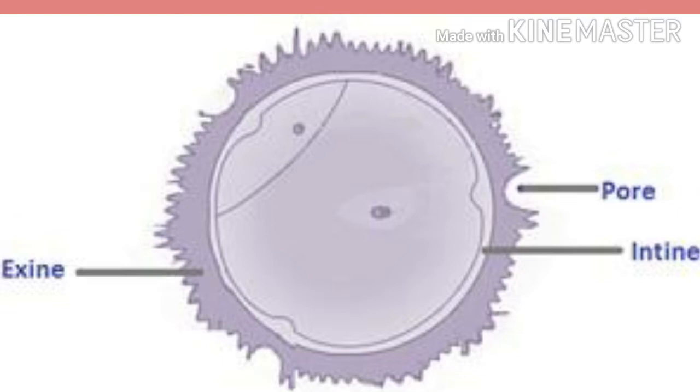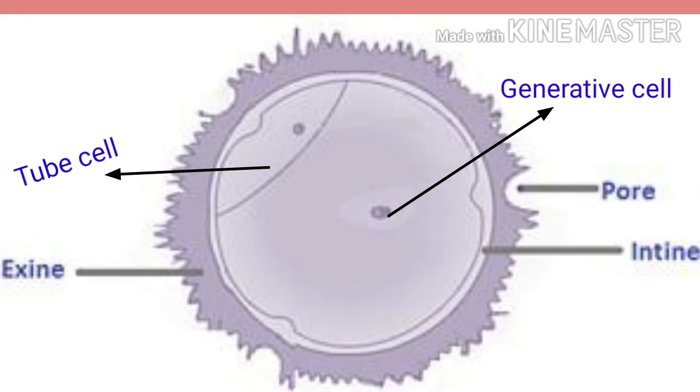Pollen grain has two cells. The smaller cell is known as generative cell, which will divide to form two male gametes. The larger cell is known as tube cell, which will give rise to pollen tube.